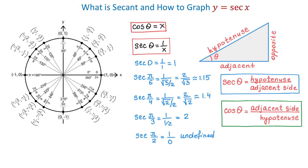As the angle increases from 0 to pi over 2, the value of the secant also increases. As we get closer to pi over 2, the function increases to infinity, and at pi over 2 it is undefined. Also notice that at 0, both cosine and secant have the value of 1. Continuing with more angles, at pi both the secant and cosine have the value of negative 1, and at 3 pi over 2 the secant will again be undefined.